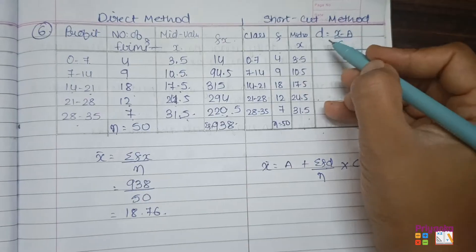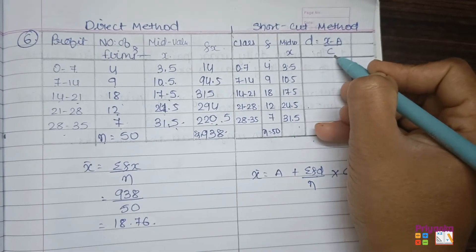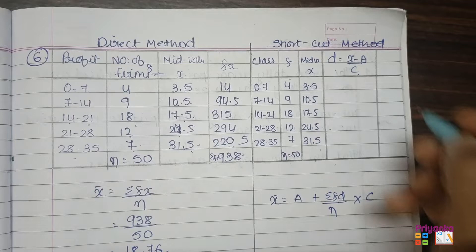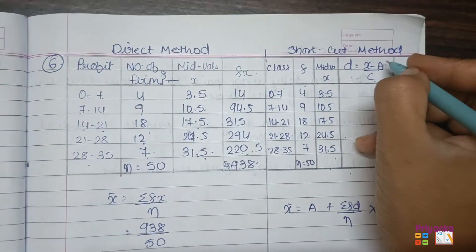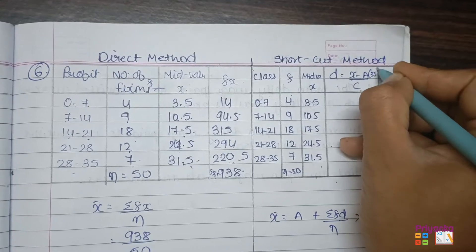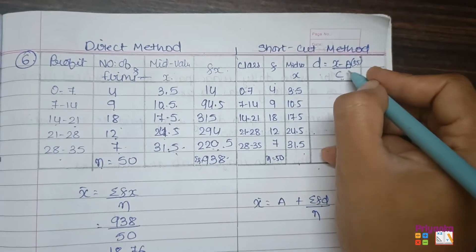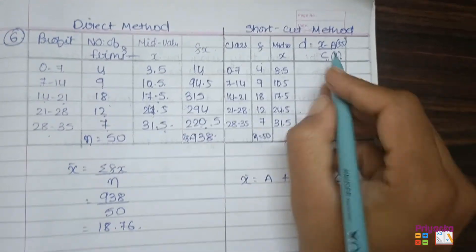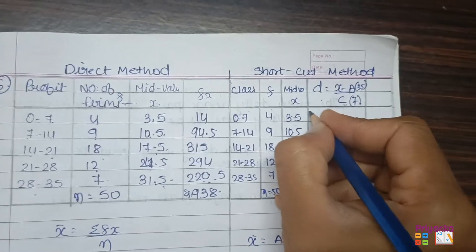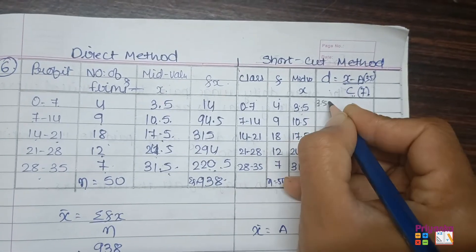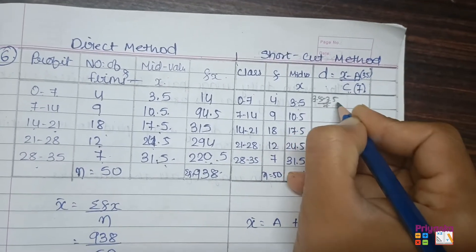After finding the mid value, the formula is: mean = a + (σfd ÷ n) × c. We need d, where d = (x − assumed mean) ÷ class length. I am going to take the assumed mean as the minimum value 3.5, and the class length is 7. So for x = 3.5: (3.5 − 3.5) ÷ 7 = 0.